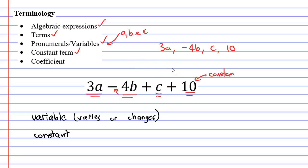And finally, we need to discuss the word coefficient. And coefficient is basically the number in front of a pronumeral. So if I was to look here for the term 3a, a has a coefficient of 3. b has a coefficient of negative 4. Very important that you include the negative in this.